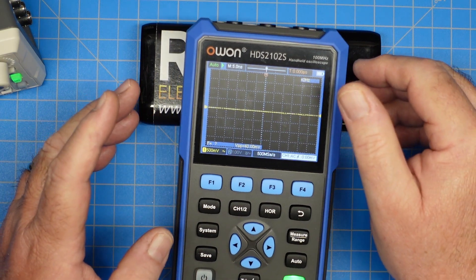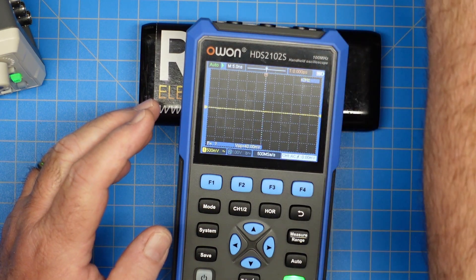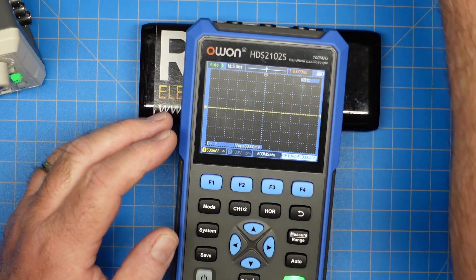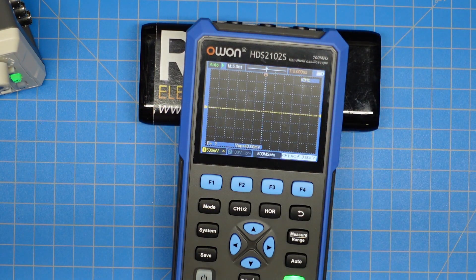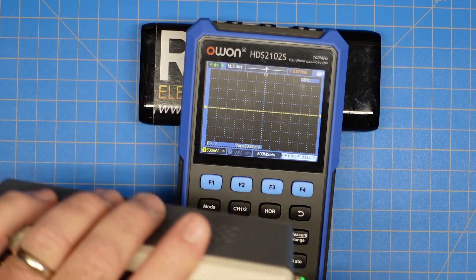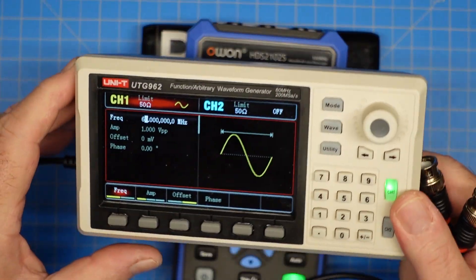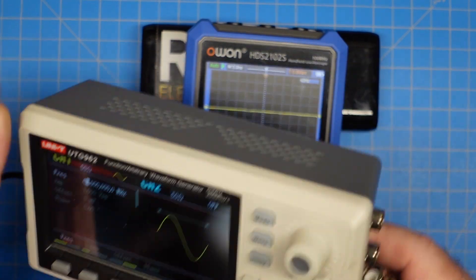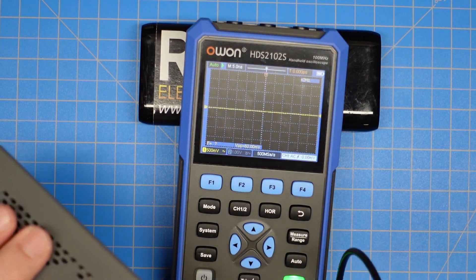So the first thing I want to do is we're going to grab a cable here and I have several cables from various places and we're going to hook this up to our signal generator. I'm using the UTG 962 and we're going to hook this up to channel one.